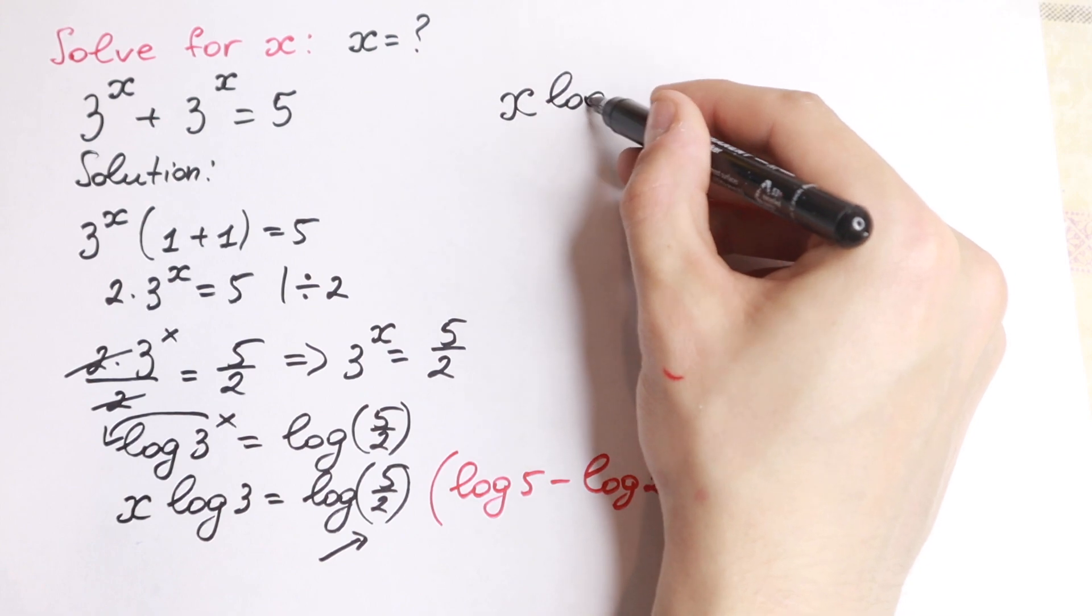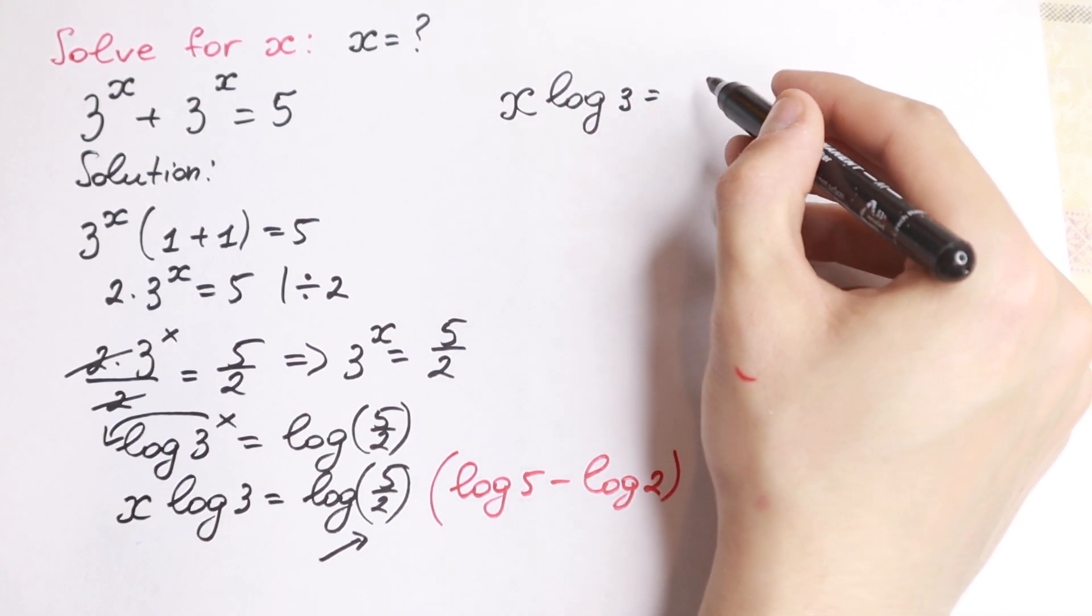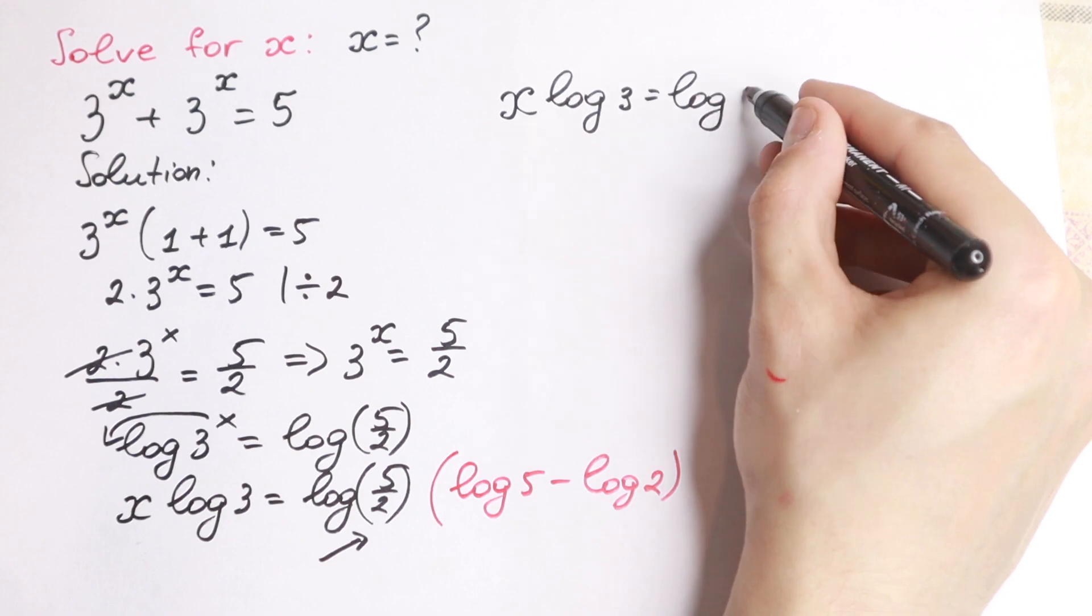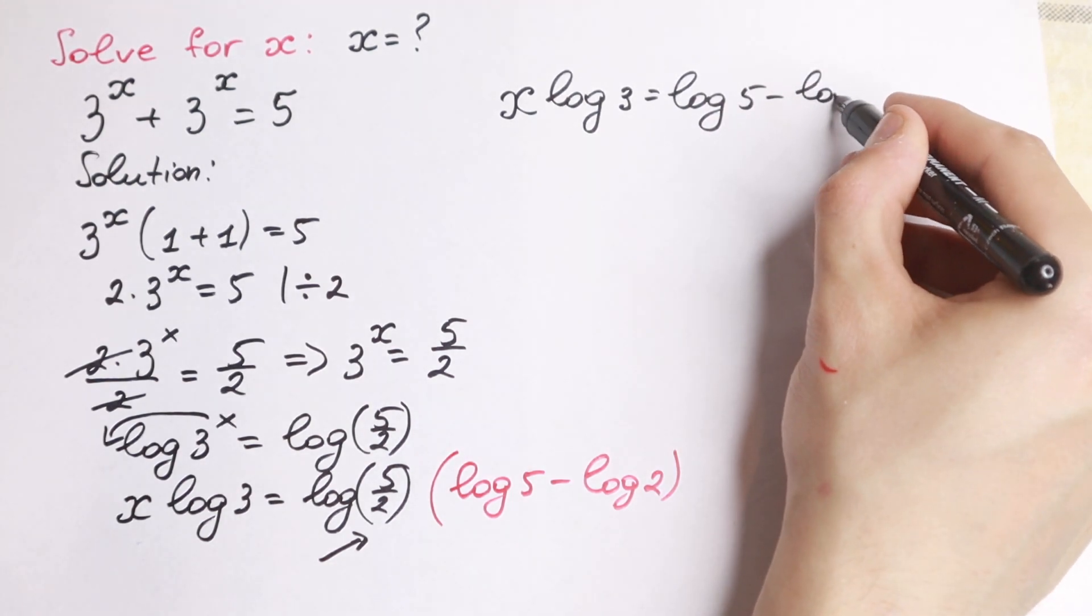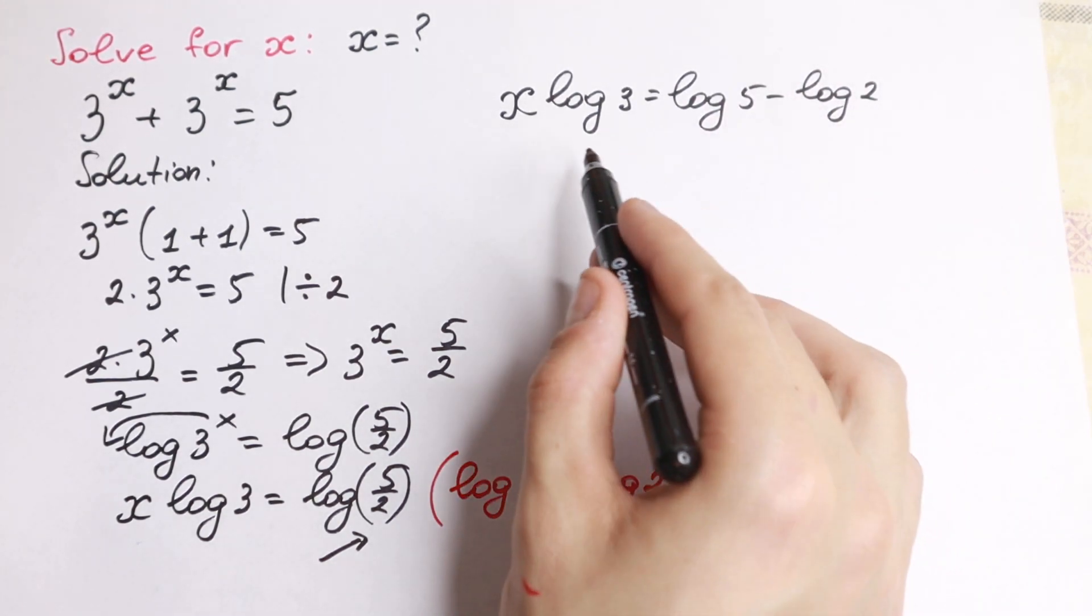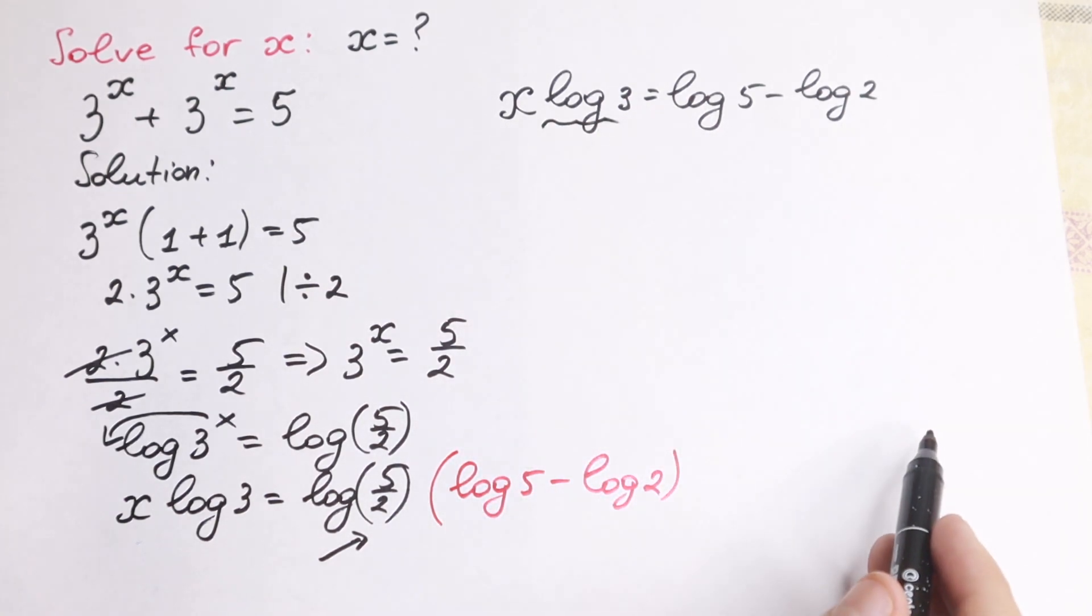x times log 3 equal to log 5 minus log 2. And the last step we need to divide by this log, log 3.